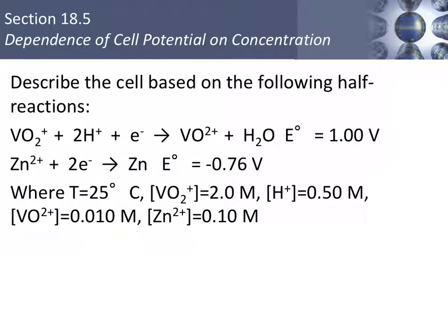Now let's describe the cell based on the following half-reactions. We can talk about the balanced cell reaction, the standard cell potential, the actual cell potential, since the molarities are not 1 molar. We can do a cell diagram showing the electron flow, and then we can also write out the line notation.